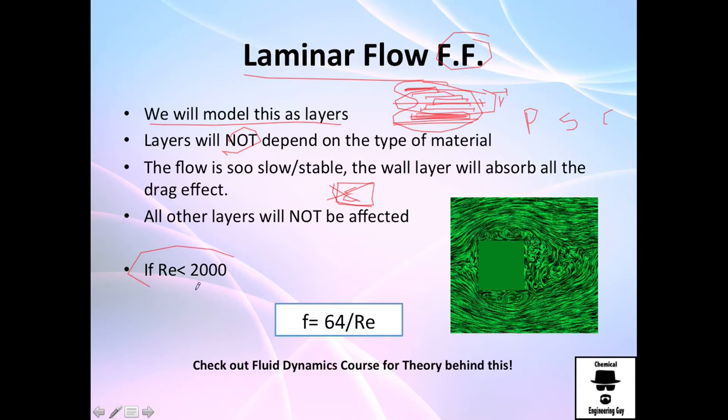So recall, laminar flow is for Reynolds numbers lower than 2000. So by definition, and this of course has a meaning, they came from many interesting concepts, but you don't need to know it. Just learn that the friction factor for laminar flow can be calculated having this number 64 divided by Reynolds number. Check out the fluid dynamics course if you really want to know why we model the friction factor like this.